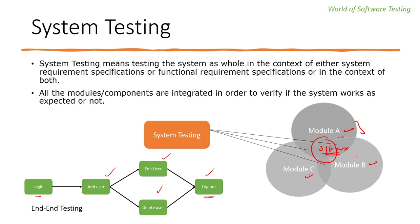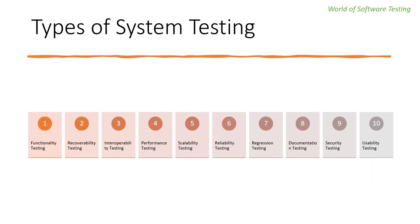Now let's understand the types of system testing. Because system testing includes all major testing kinds, it is a superset of all testing types. The emphasis on particular testing methods may change depending on the product, organizational position, procedures, deadlines, and requirements. We'll cover all these types in more detail in upcoming lectures — here we're just taking an overview.